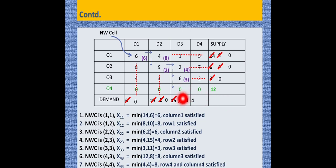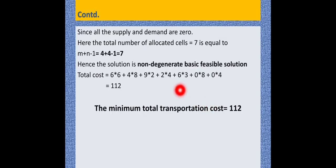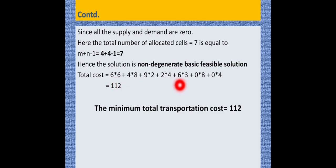Next NWCR cell: comparing 8 and 12, minimum is 8, allocated and struck off. Remaining: 12 minus 8 equals 4, which is then allocated. Since all supply and demand are 0, the total number of allocated cells is 7, equal to m plus n minus 1, that is 4 plus 4 minus 1 equals 7. The solution is a non-degenerate basic feasible solution, and the minimum total transportation cost is 201.